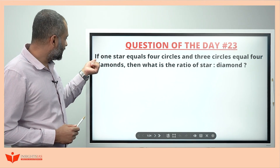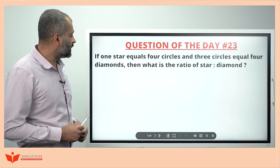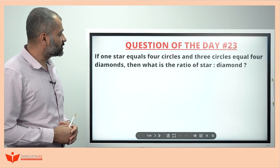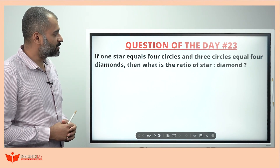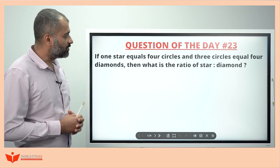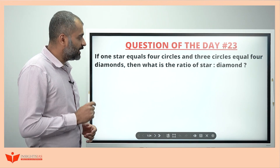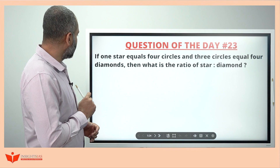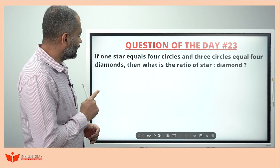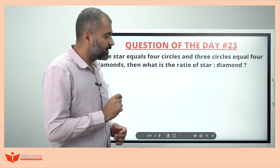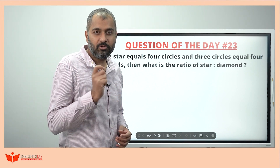This question is: if one star equals four circles and three circles equal four diamonds, then what is the ratio of star to diamond?